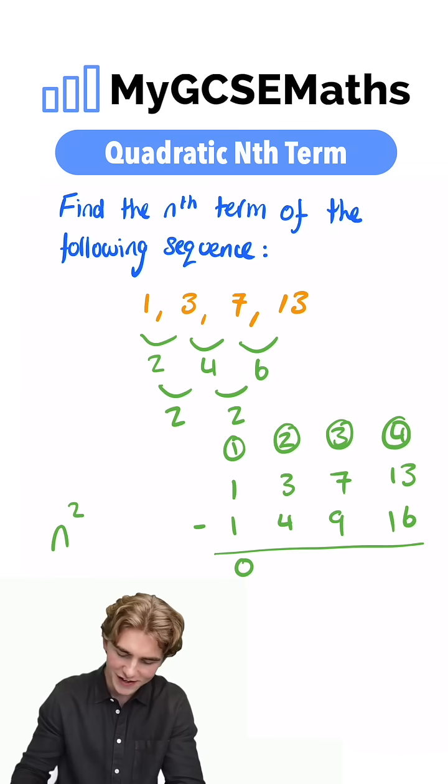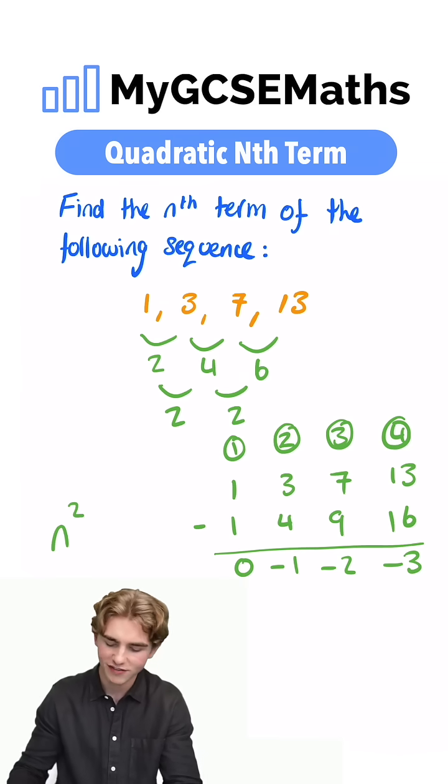1 subtract 1 is 0, 3 subtract 4 is minus 1, 7 subtract 9 is minus 2, 13 subtract 16 is minus 3.